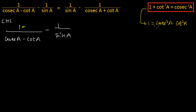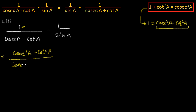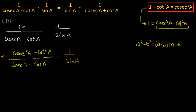We will replace this 1 by cosec²A minus cot²A. So this will become cosec²A minus cot²A, divided by cosecA minus cotA, minus 1 by sinA. The numerator cosec²A minus cot²A can be factored using the difference of squares as cosecA minus cotA, multiplied by cosecA plus cotA.